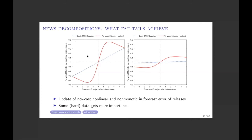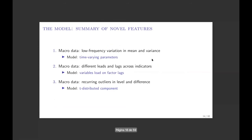To recap: we have looked at a few features of macro data. First, low-frequency variation in mean and variance, addressed with time-varying parameters. Second, macro data has different patterns of leads and lags across indicators, addressed with a distributed lag on the factor loadings. Third, there are recurring outliers, which we model with the distributed outlier component using a t-distribution.